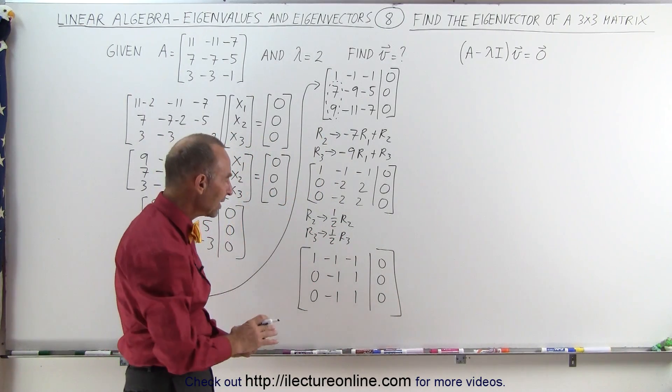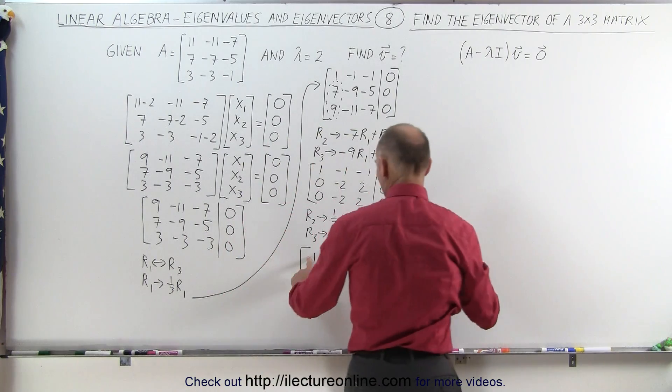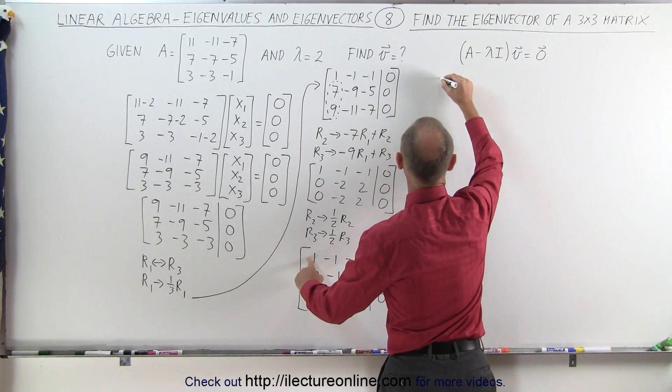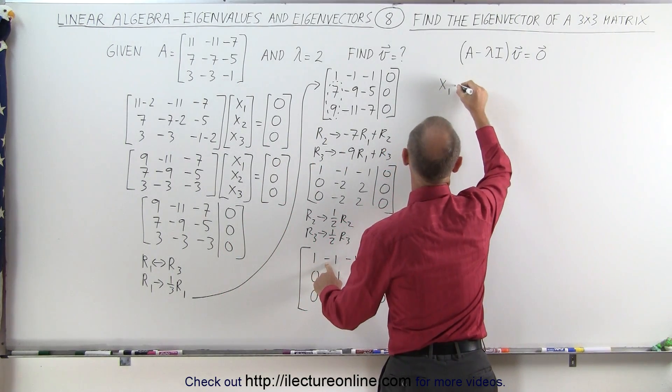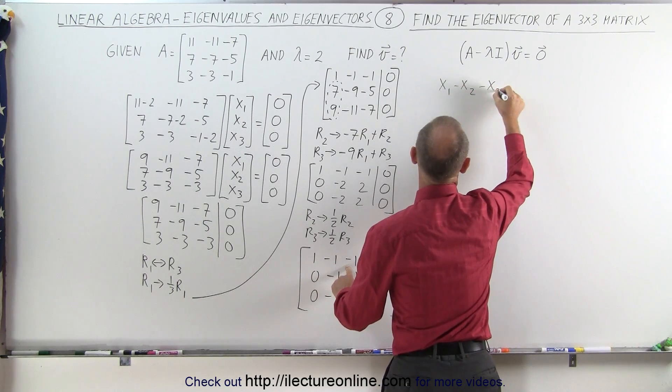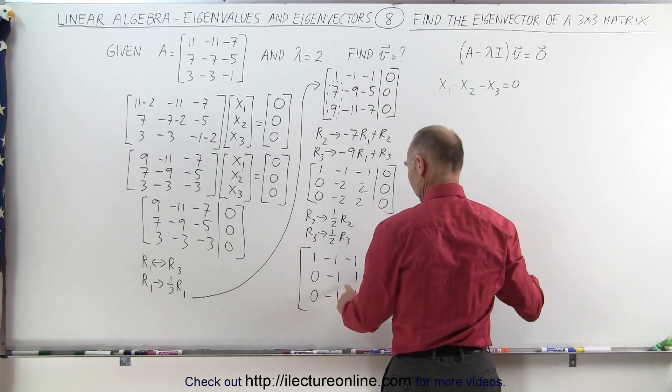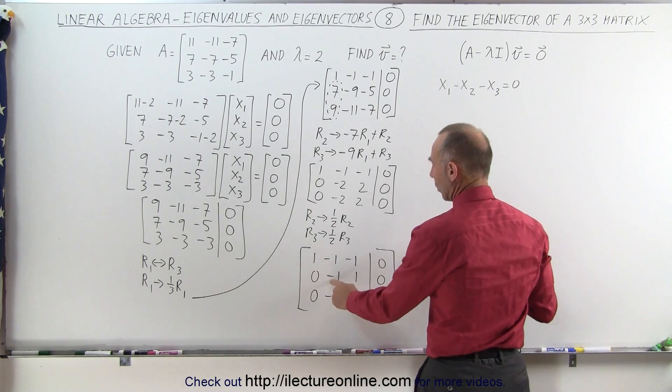So, writing that now in equation format, using the top, I can say that x1 minus x2 minus x3 equals 0. And from the second equation, which is identical to the third equation,